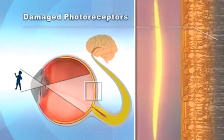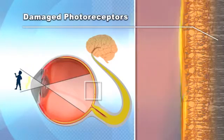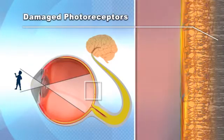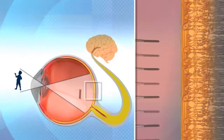Degeneration of photoreceptors prevents the brain from receiving signals from the eyes, resulting in blindness. However, following implantation,